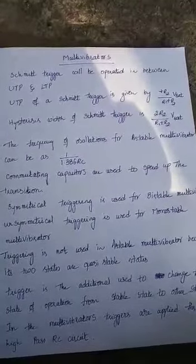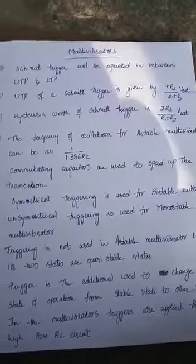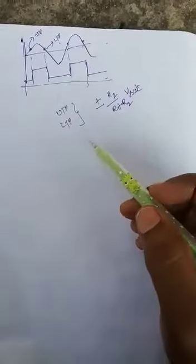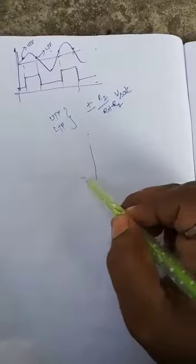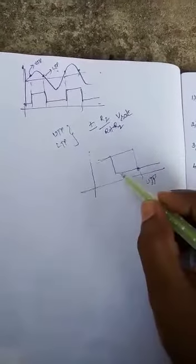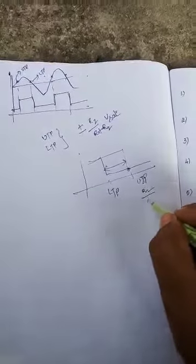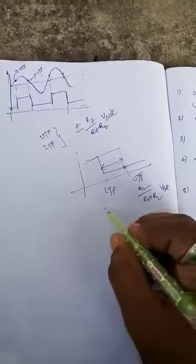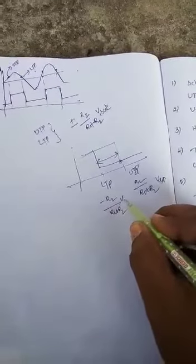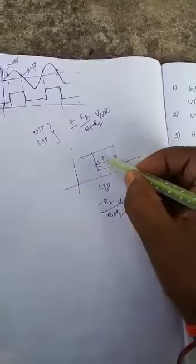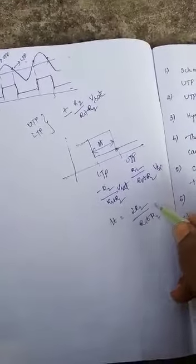The next question: the hysteresis width of a Schmitt trigger is given by 2 into R2 by R1 plus R2 into V_sat. Let us draw the graph between the increasing input voltage and the decreasing input voltage for UTP and LTP. The UTP value is positive and the LTP value is always less than UTP. The hysteresis width is the width between UTP and LTP, where UTP is R2 by R1 plus R2 into V_sat and LTP is minus R2 by R1 plus R2 into V_sat. Therefore, H equals 2 into R2 by R1 plus R2 into V_sat.